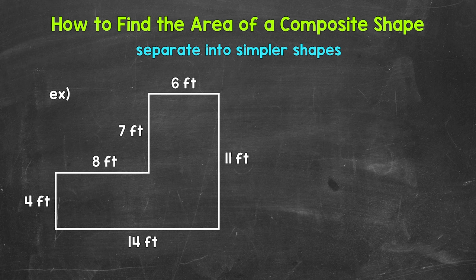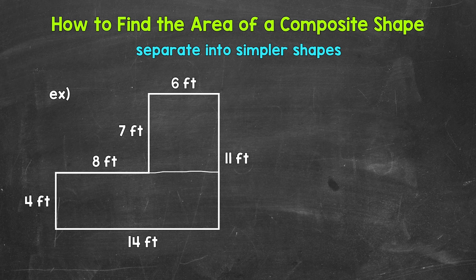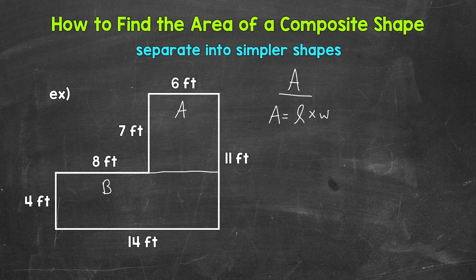Now there are different ways to separate this figure, but I'm going to separate it into a top and a bottom rectangle. You can also separate this into a left and a right — either way is correct and you will get the same total area in the end. Let's call this shape A and this shape B. Let's start by finding the area of A. Since it is a rectangle, let's use the formula: area equals length times width. I'm using a cursive L so it doesn't look like a one. Now we need to find the correct length and width for rectangle A.